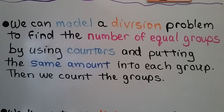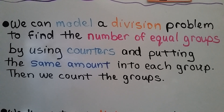We can model a division problem to find the number of equal groups by using counters and putting the same amount into each group, then we count the groups.